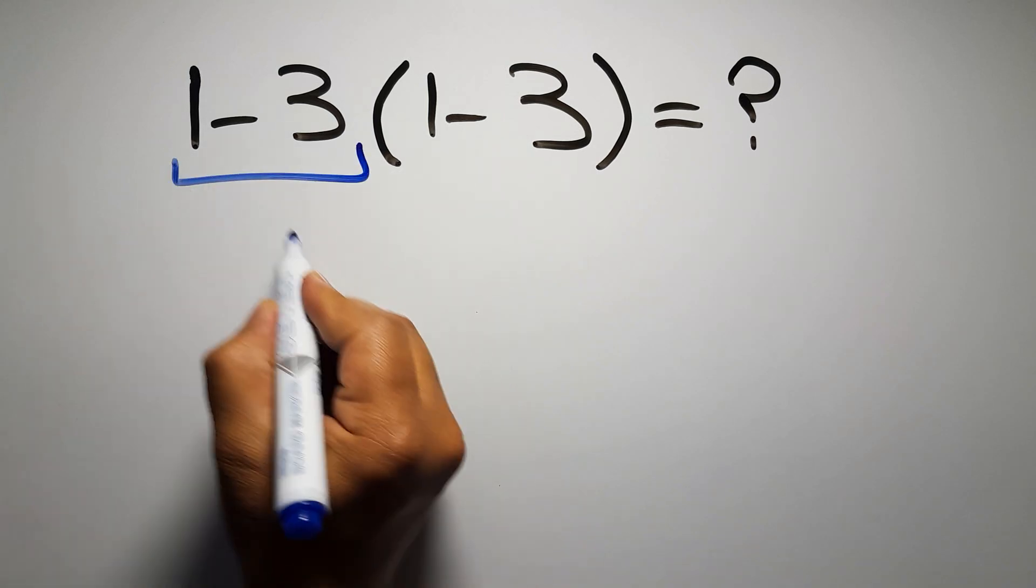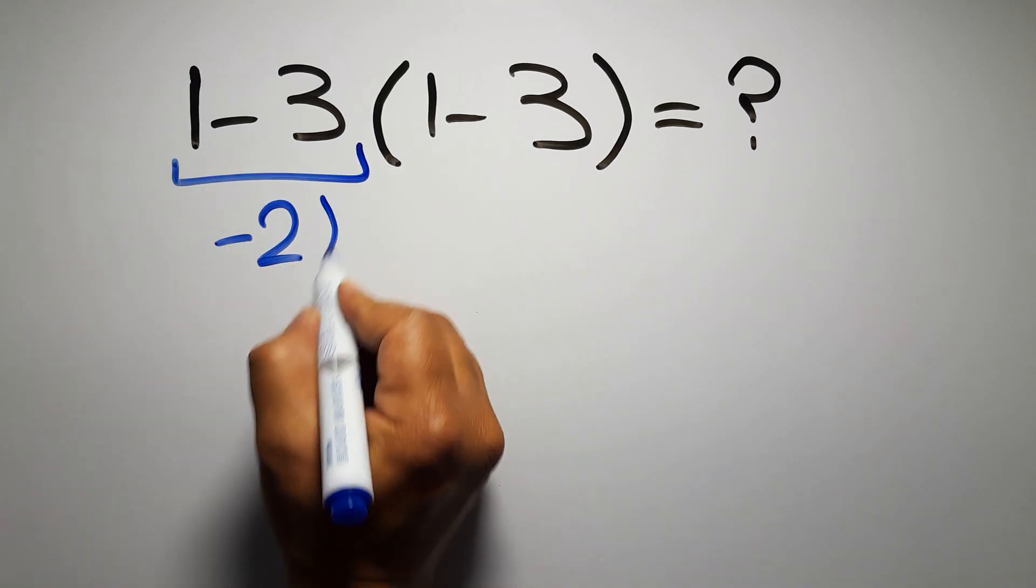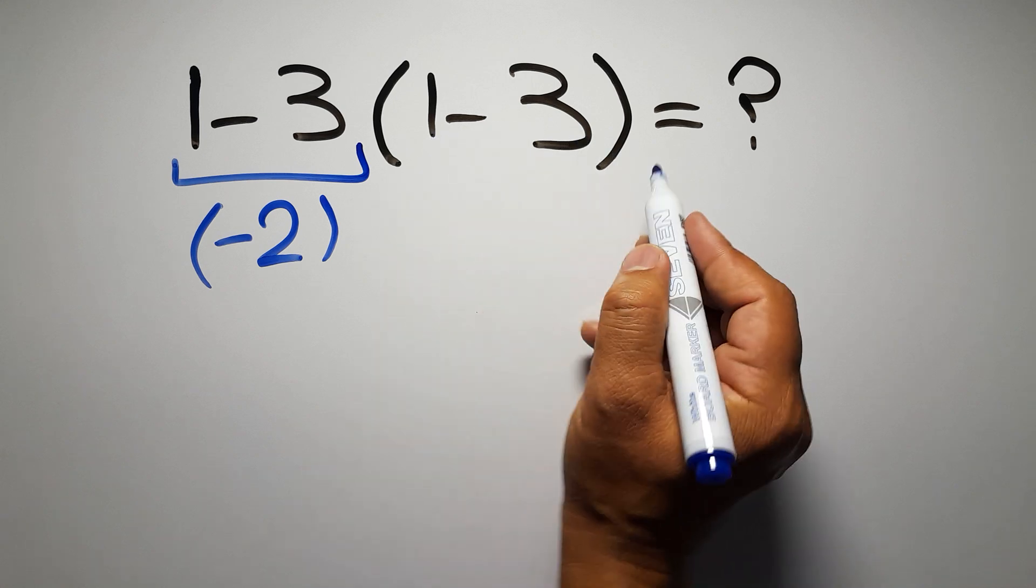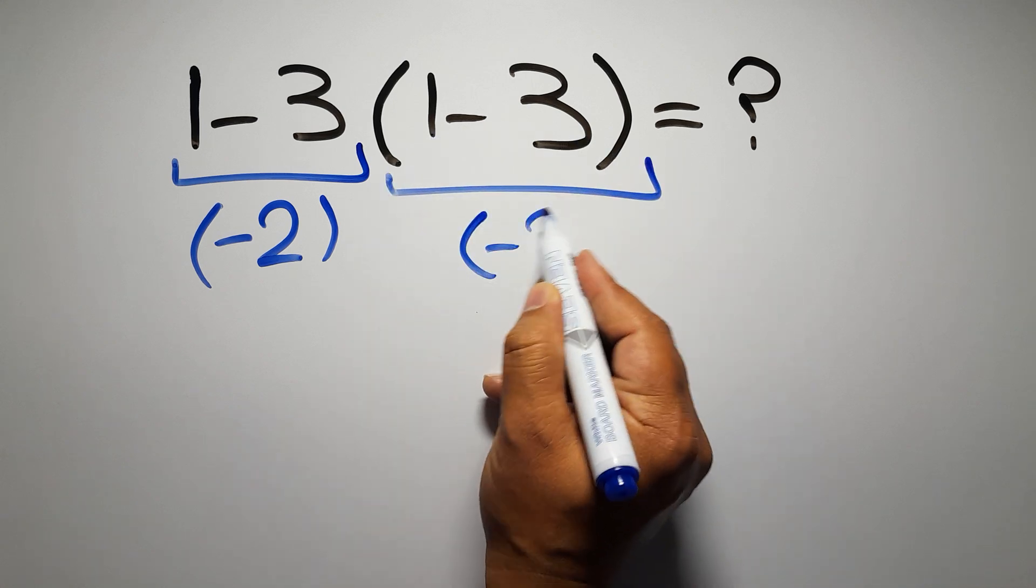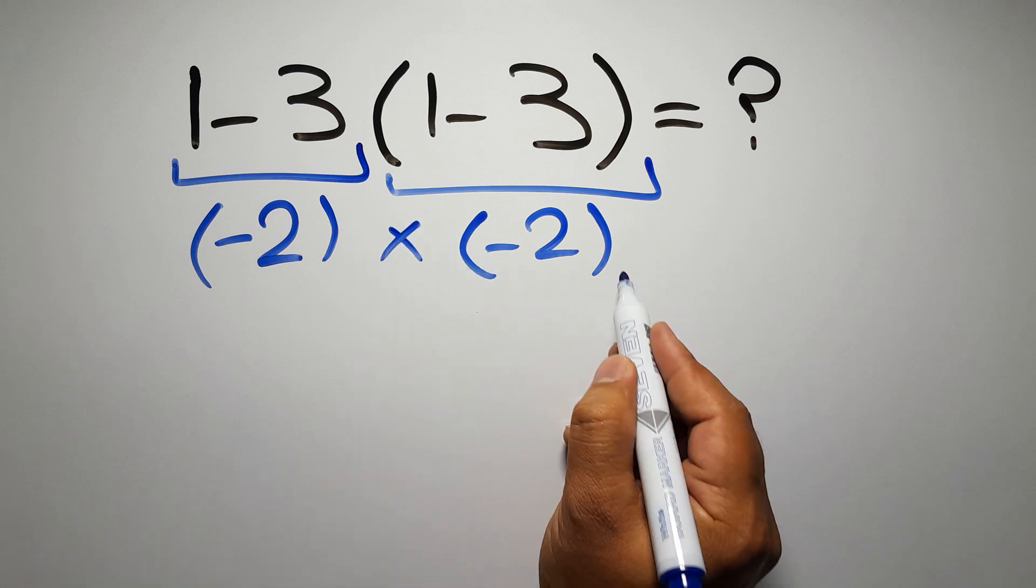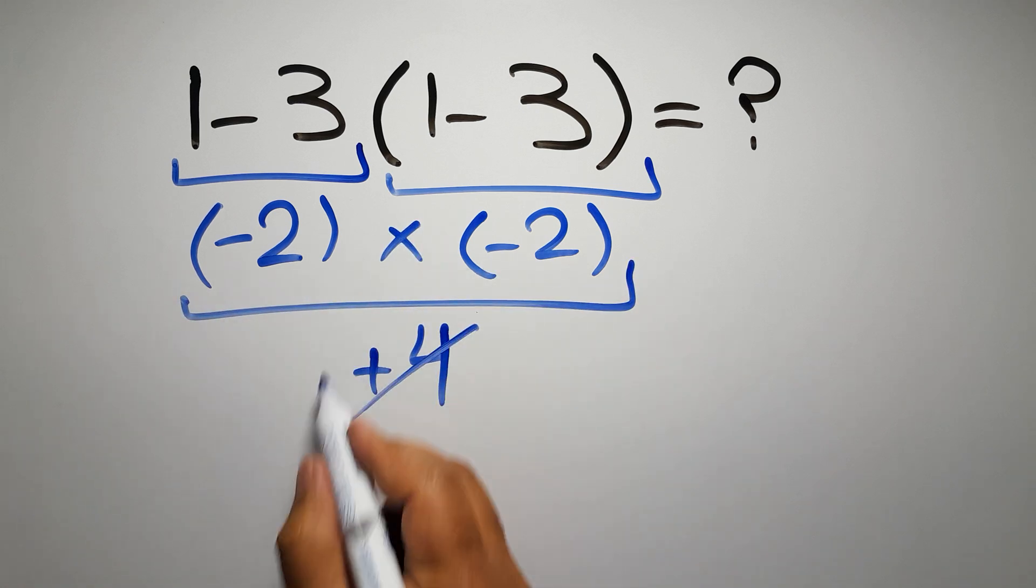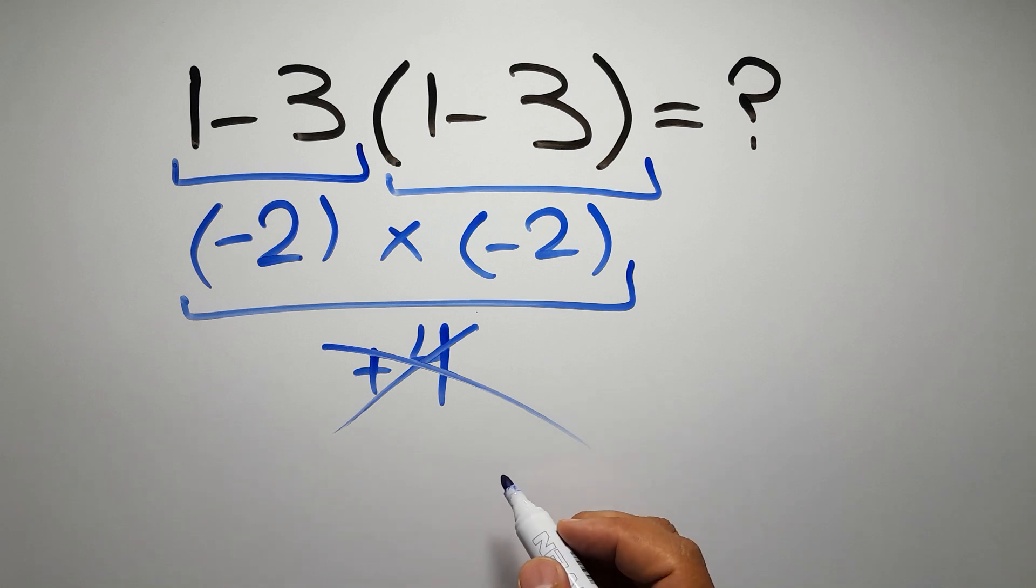1 minus 3 gives us negative 2, and again here inside these parentheses we have 1 minus 3, so negative 2 times negative 2 which equals positive 4. But this answer is not correct because according to the order of operations...